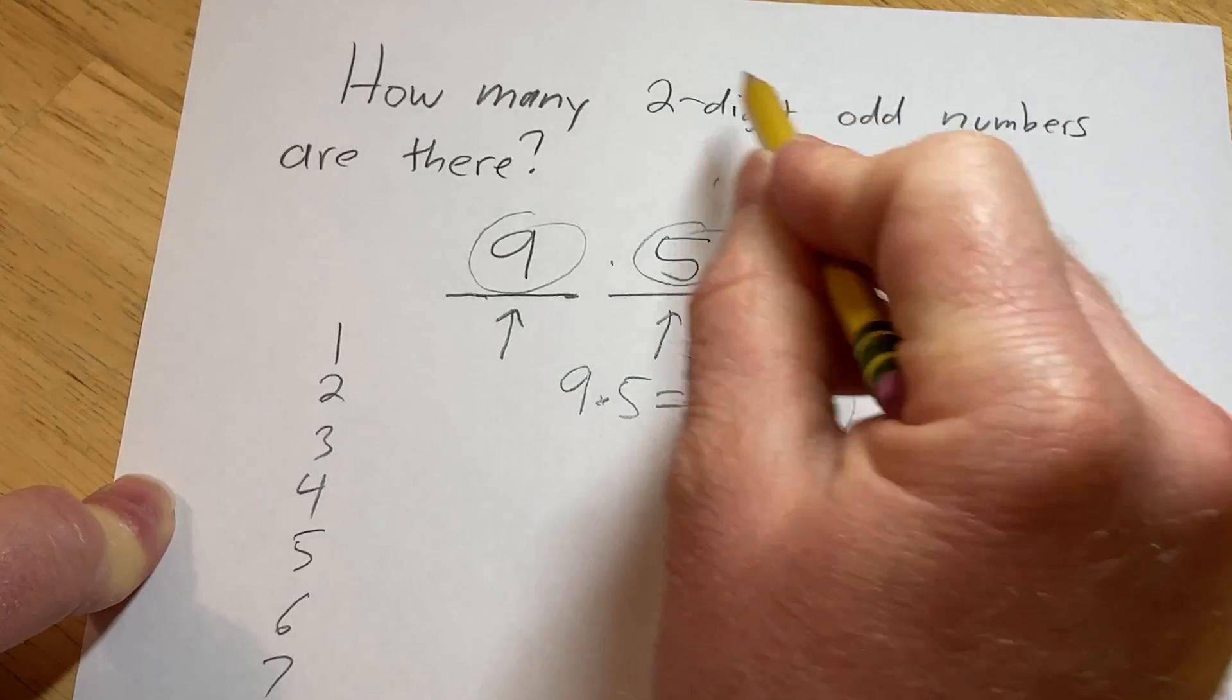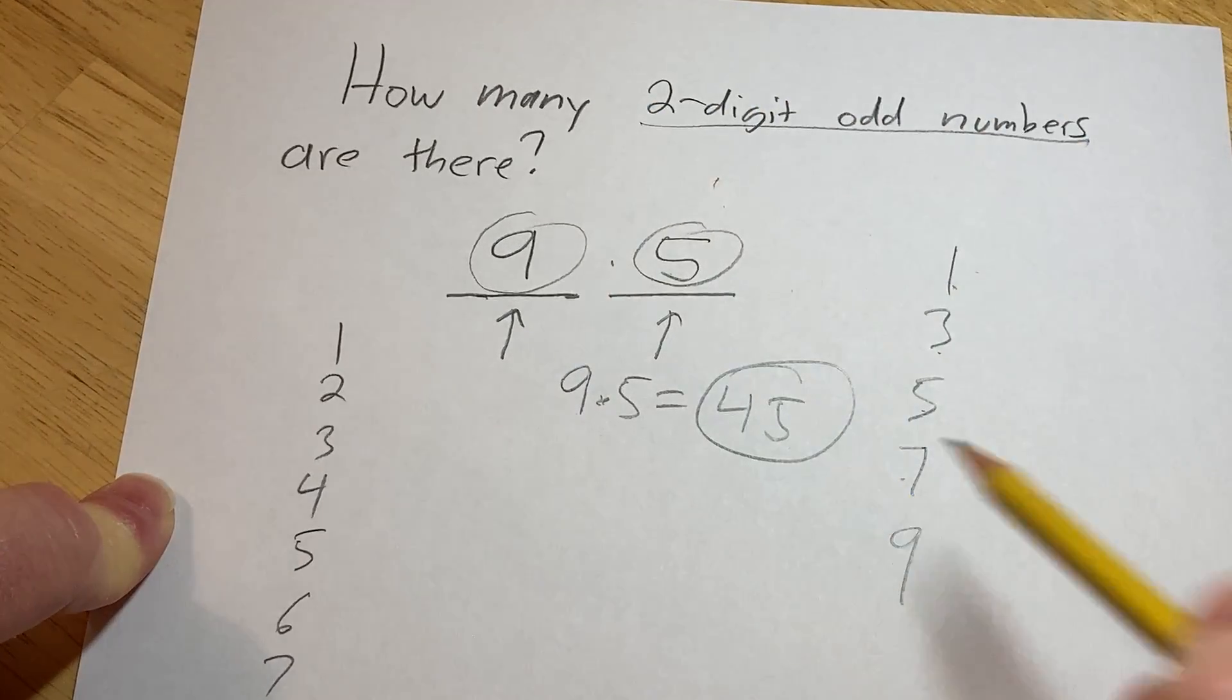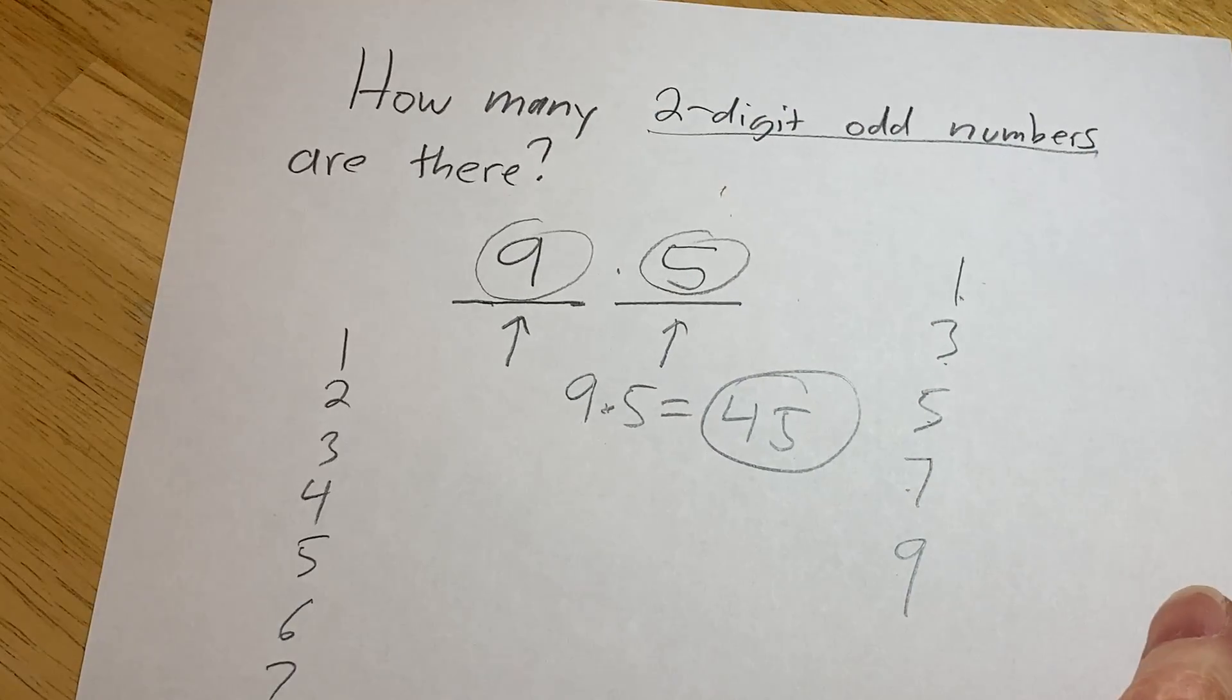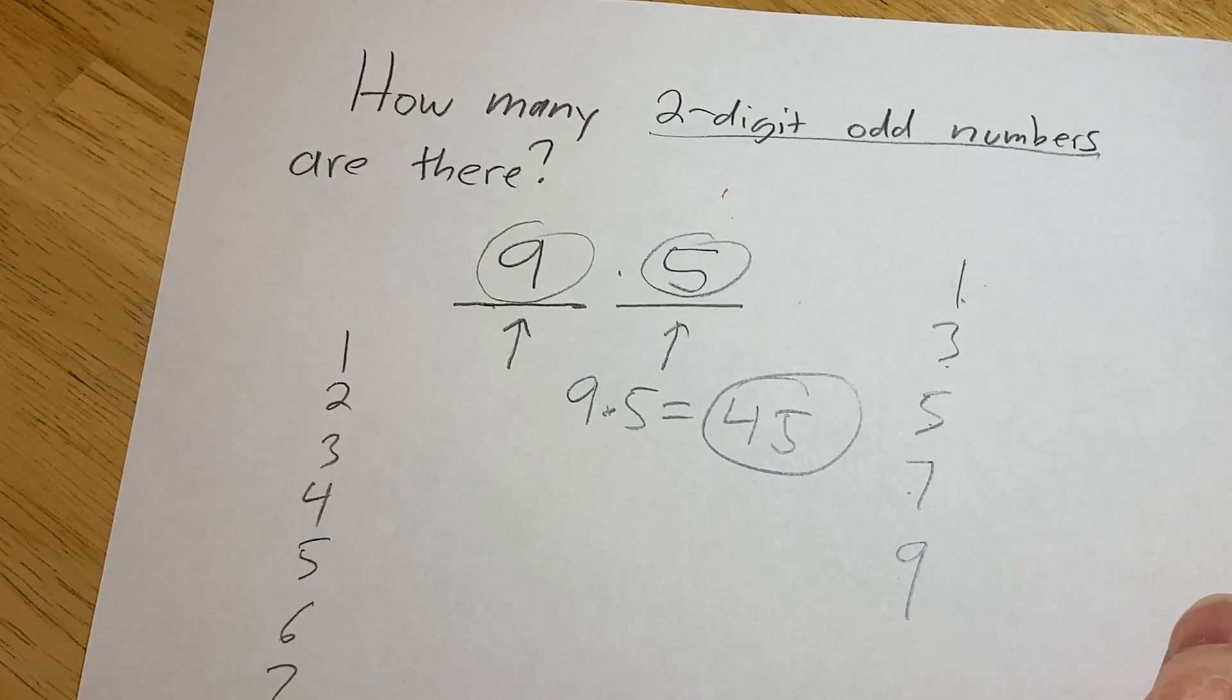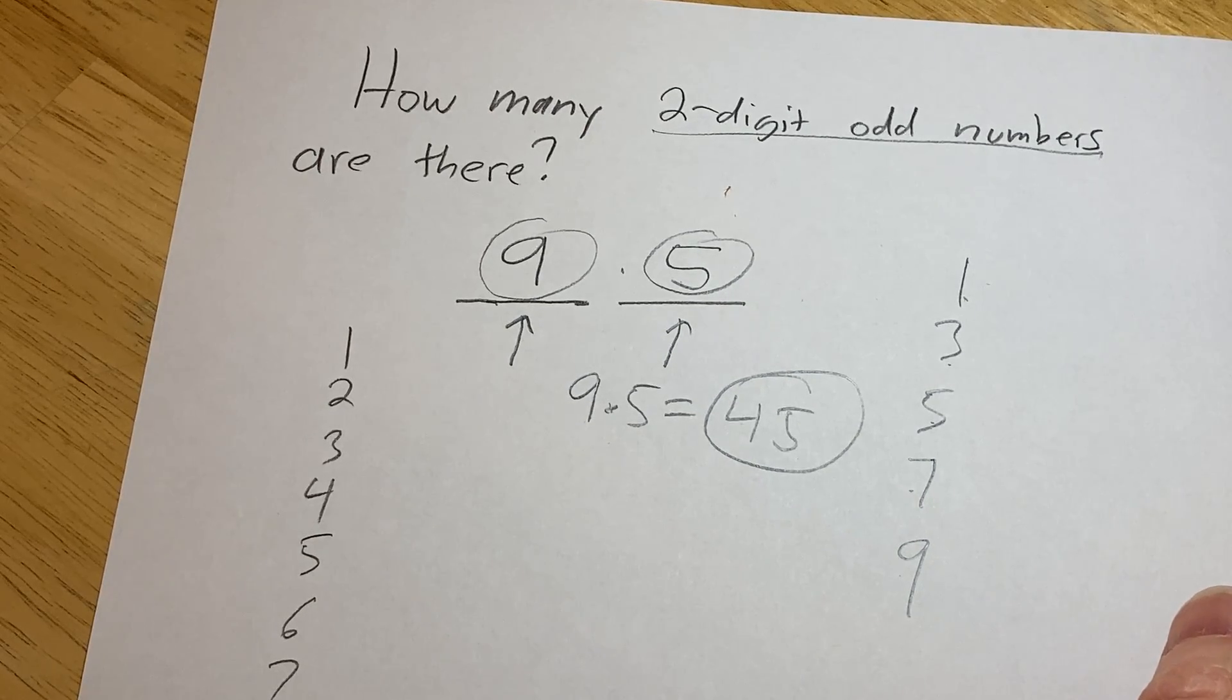So there are 45 ways to construct a two-digit odd number, therefore there are 45 two-digit odd numbers. I hope this video has been helpful. Good luck.